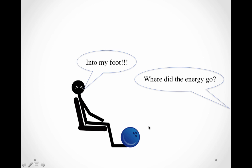Where did the energy go? Dan knows — the energy went into his foot. And the bowling ball would say that it's vibrating a little bit too. Dan's foot is hurting and the bowling ball is vibrating. That's a topic for another day when we look at non-conservative systems. Right now, we just want to look at the conservative system part while the ball was falling.